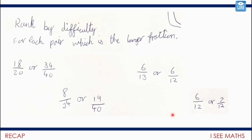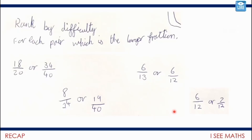This example came through from Jamie - thank you Jamie. Pause the video, have a go at comparing the fractions, deciding which you find easier and harder. I went for this one first - it's in twelfths so I can just compare the numerators: seven-twelfths is larger. For six-thirteenths versus six-twelfths: thirteenths are smaller parts than twelfths, so six-twelfths must be larger, and it's also equivalent to a half.